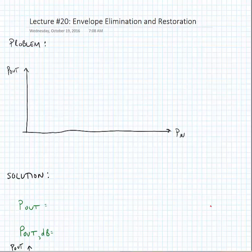Today we're going to talk about a linearization technique that also improves efficiency called envelope elimination and restoration. We've already learned that power amplifiers, particularly linear amplifiers, are most efficient when they're operating near their saturation point, and that is when their voltage swing and current swings are at their maximum.